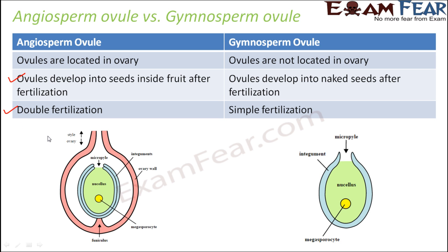In angiosperms, double fertilization takes place, whereas in gymnosperms, simple fertilization occurs. As we go ahead we will see that two fusions take place inside the embryo sac of the angiosperm. There are two male gametes and two female gametes — one is the egg cell and the other is the polar nuclei. So two fusions take place in angiosperms, but in gymnosperms only one fusion takes place.